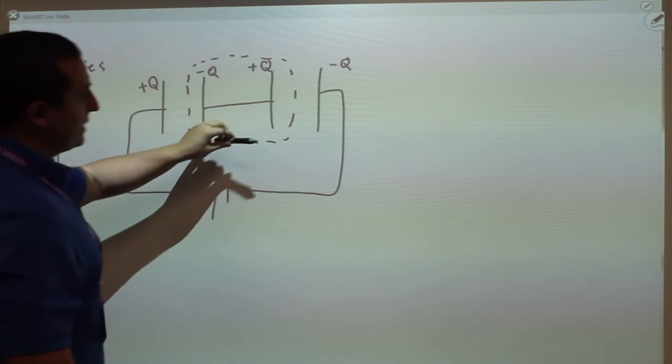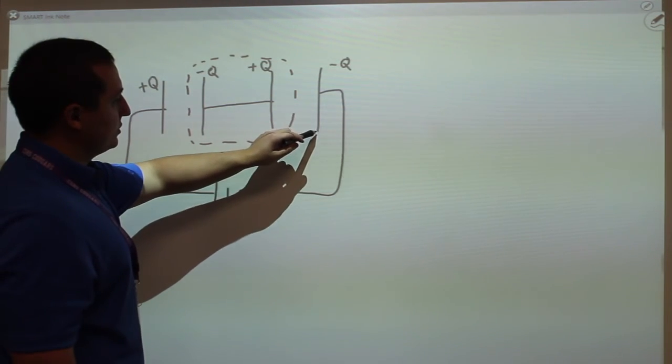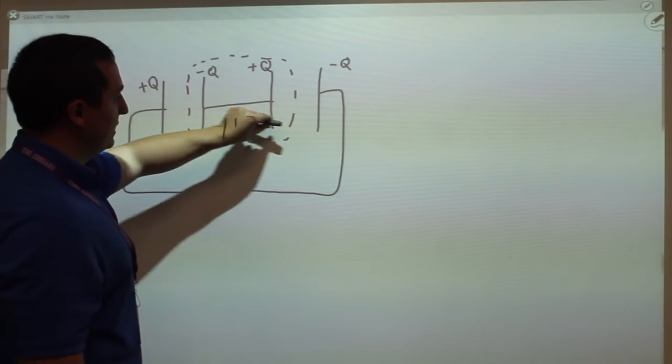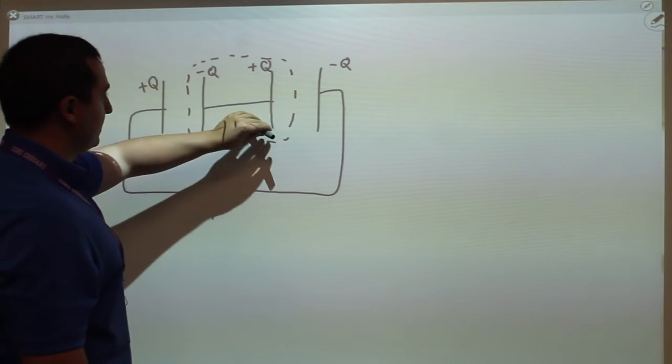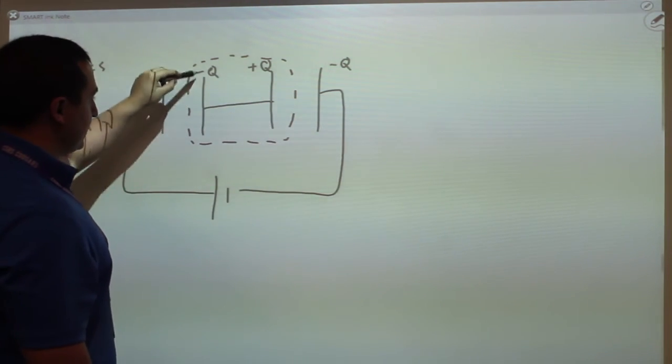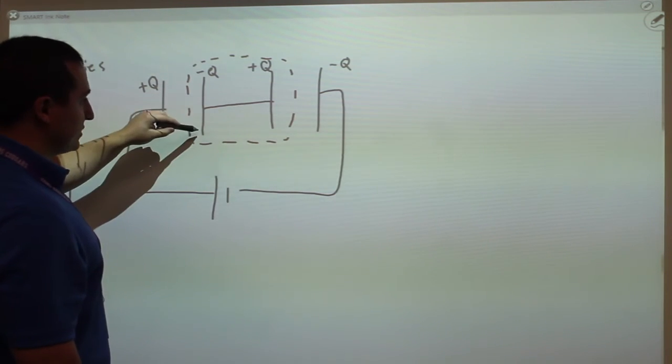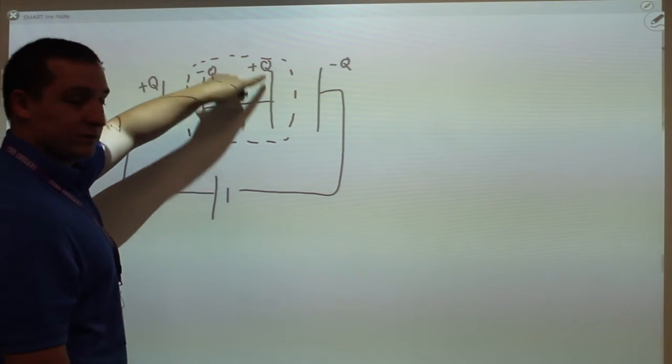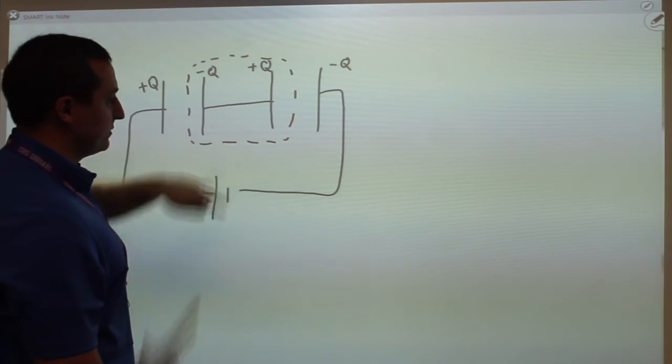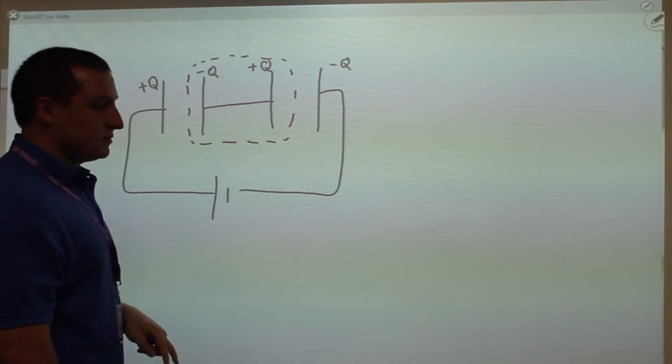So you can think about the charge here pushing the electrons away from this side of the conductor. And so now there's an excess number of electrons over here on the left and a deficit here on the right, so now the conductor in the center is polarized.